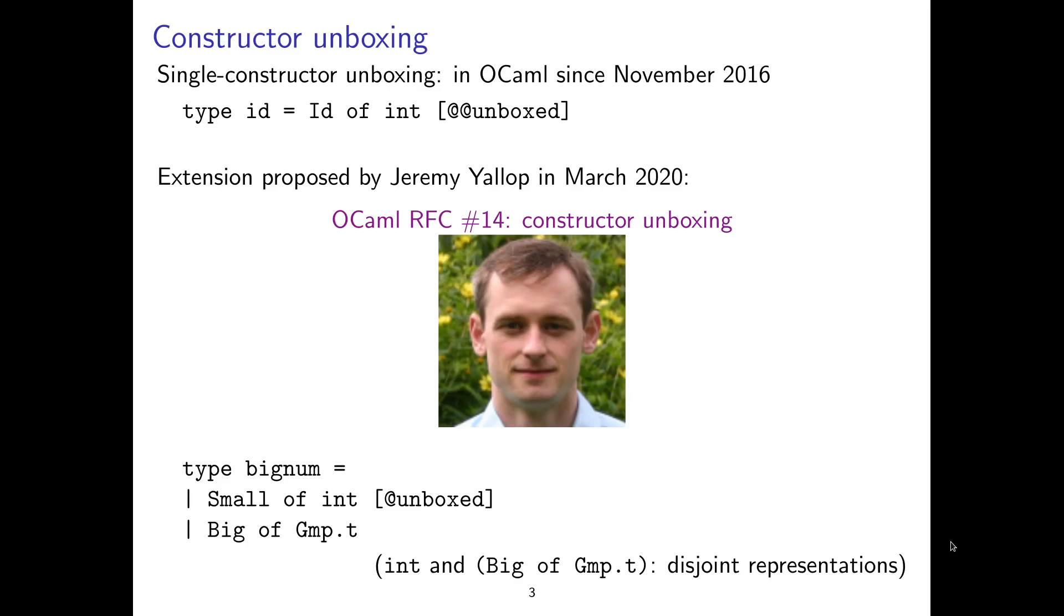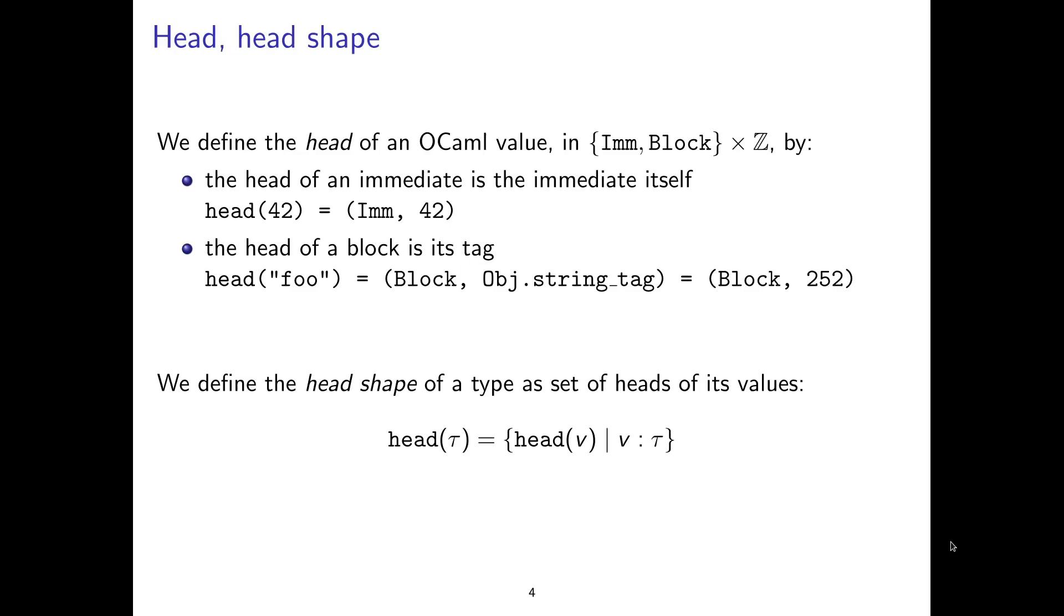But to get actually a performance win out of this, you want to unbox the small constructor to make sure that the small integers are represented just as primitive integers and not as boxed values. So in this case, it makes a big performance difference. And the reason why it makes sense to forget about the small constructor here is that the two sets of values, so integers on one side and this big of GMP.t are disjoint. So OCaml uses a tagging scheme. Many languages do that, and the details vary. In OCaml, there is one bit in the value that tells you whether it's an immediate value or a pointer to a block on the heap. So even if you forgot about small, you can use this tagging bit to distinguish the two cases.